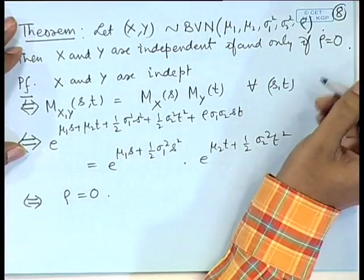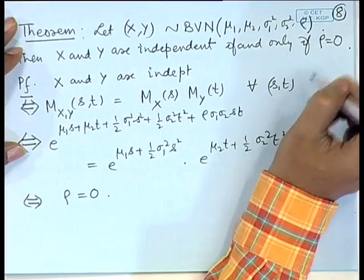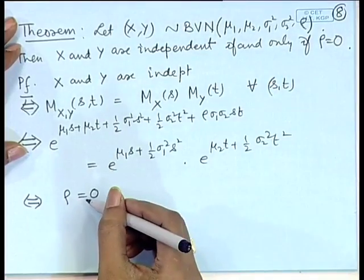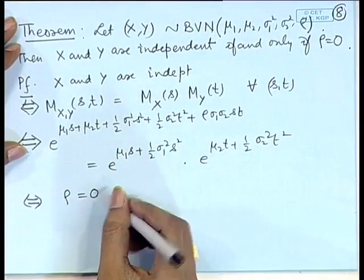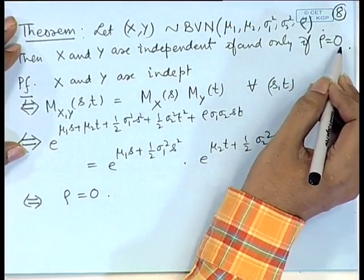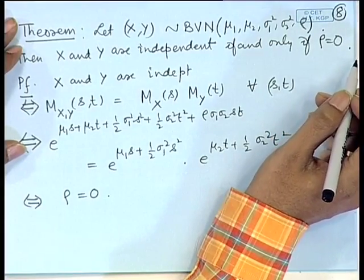So although in general correlation equal to 0 does not imply independence, in the case of the bivariate normal distribution, independence and correlation equal to 0 are equivalent.